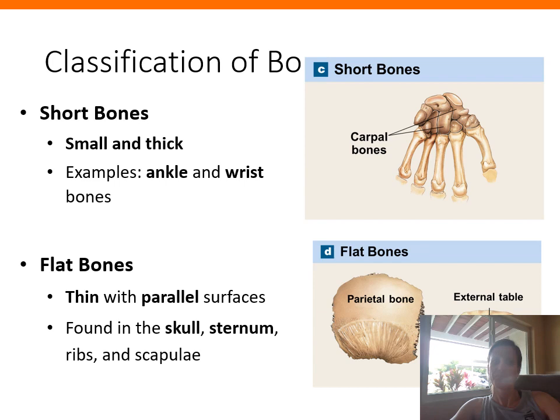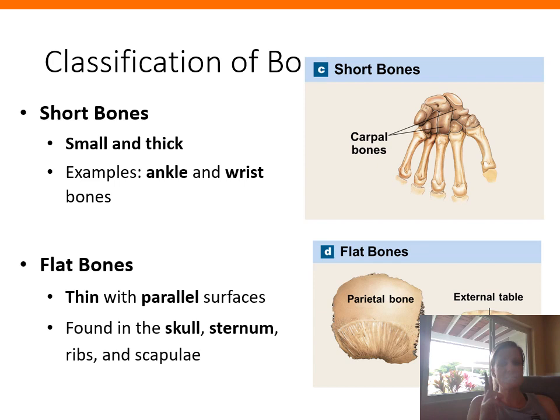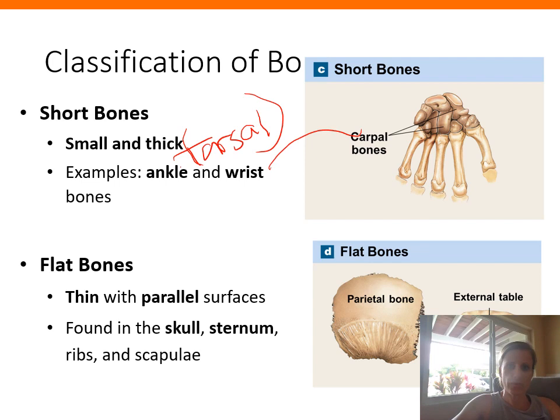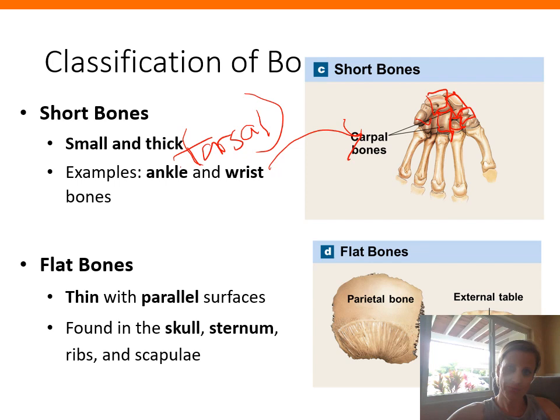Short bones are roughly cube-shaped — small and thick, with length similar to width. Classic examples are the tarsal bones in the ankle and the carpal bones in the wrist, which are relatively boxy and stout.